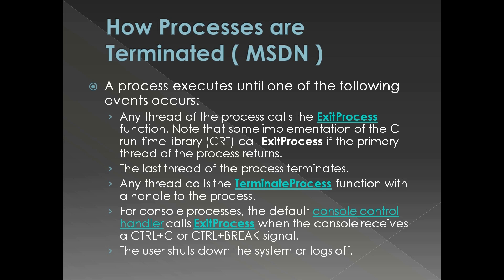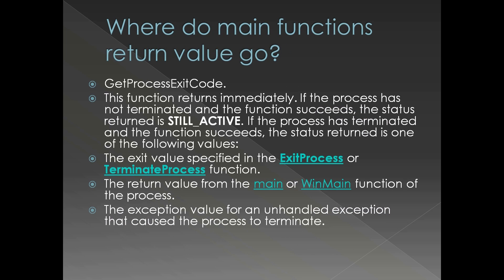Nothing much different from what we have seen so far — just call TerminateProcess, ExitProcess, etc. Have you ever wondered what happens to the value we return from a main function in a C program? That is what is called the process exit code. So how do you get this?